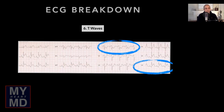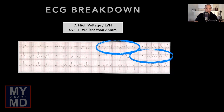The T waves should either be isoelectric or inverted in V1, and never taller than those in V6. Here it's reassuring — the T wave in V1 is inverted and not bigger than the one in V6. Regarding voltage: this patient was in his mid-50s, so if the S wave in V1 plus the R wave in V5 exceeded 35 millimeters, we'd be concerned about LVH. It is not — the voltage is within normal range, which is reassuring against LVH.